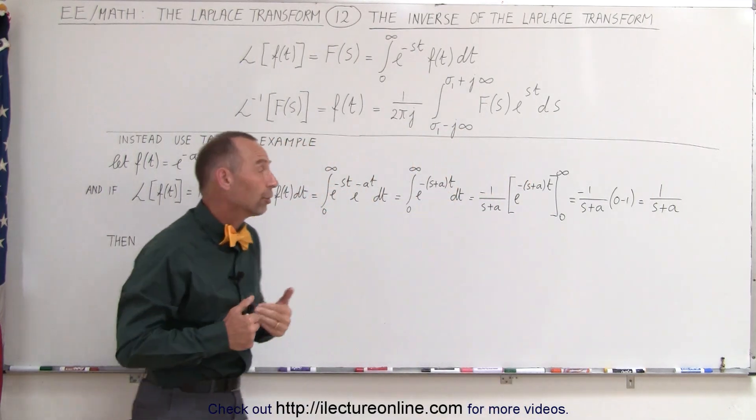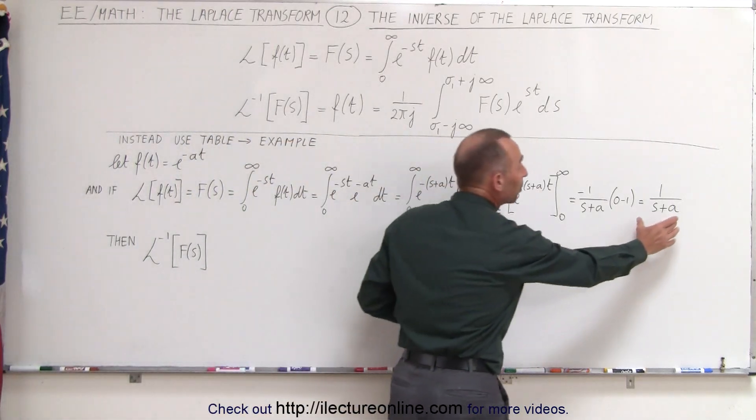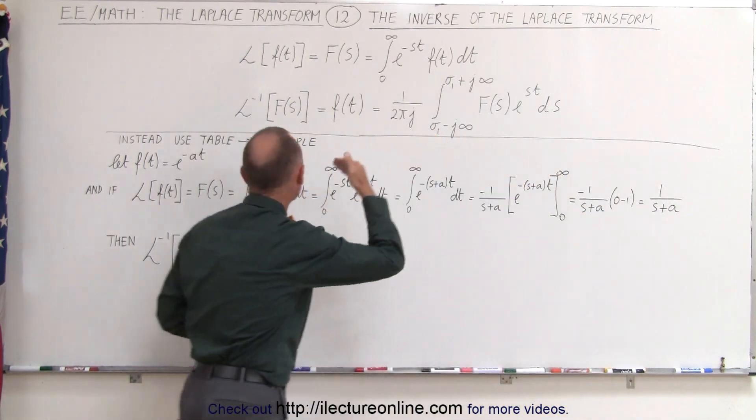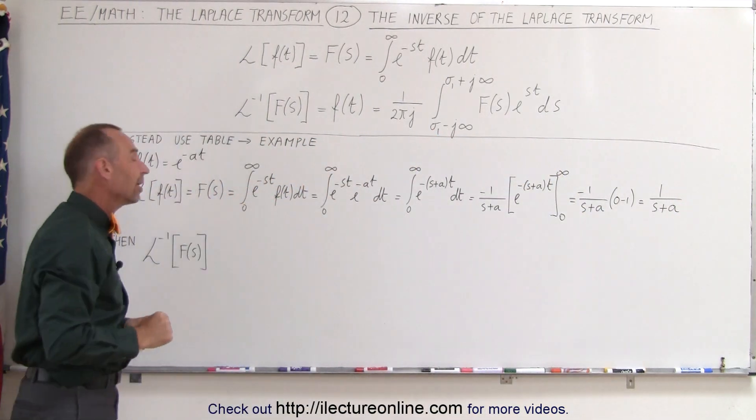And then to go backwards, we can simply take one over s plus a, and assume that the inverse Laplace transform of that will give us back the original equation, e to the minus at times t.